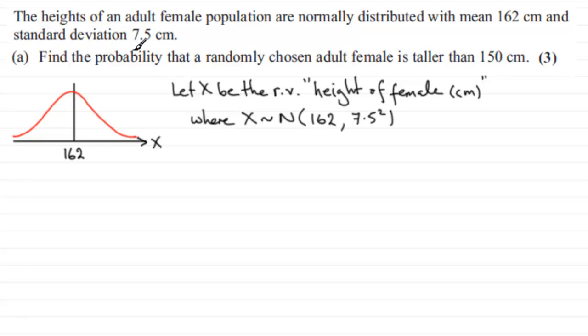We're trying to find the probability a randomly chosen adult female is taller than 150 centimeters. So if we just put 150 centimeters over here, this is an observed value, so call it little x for the observed value, and that is 150. And that probability is represented by the area to the right of 150.